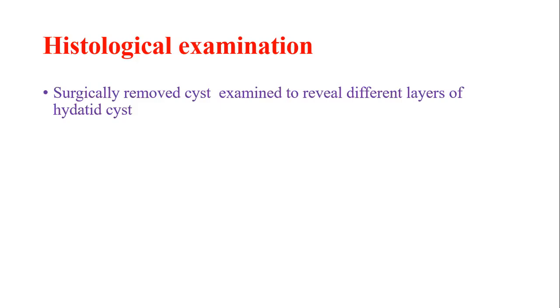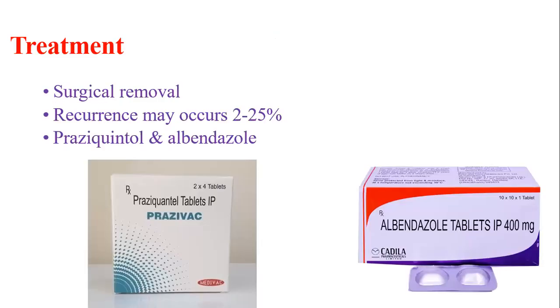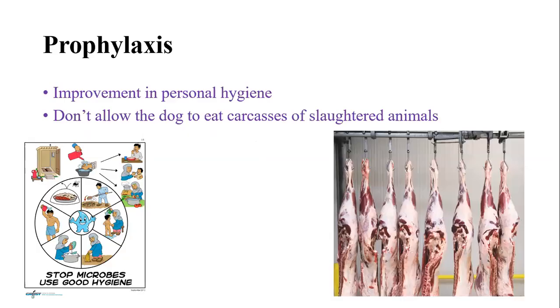Treatment: surgical removal is the best method, though recurrence may occur in 2 to 25 percent of cases. Drugs used include praziquantel and albendazole. Prophylactic measures include improving personal hygiene and not allowing dogs to eat carcasses of slaughtered animals.